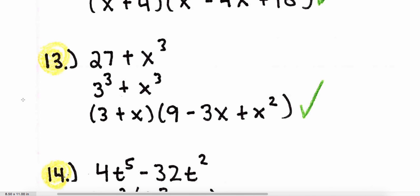Number thirteen also falls into the sum of two cubes category. 27 plus x to the third is the same as 3 to the third plus x to the third, so a is 3 and b is x. Applying the pattern from the know-it notes: 3 plus x, times 3 squared minus 3 times x plus x squared.